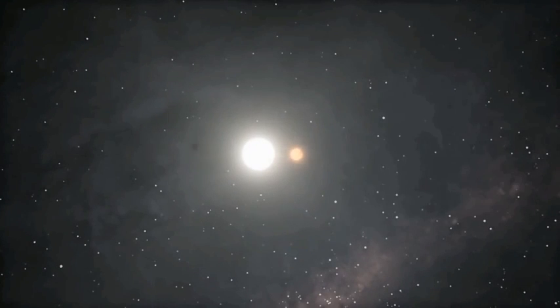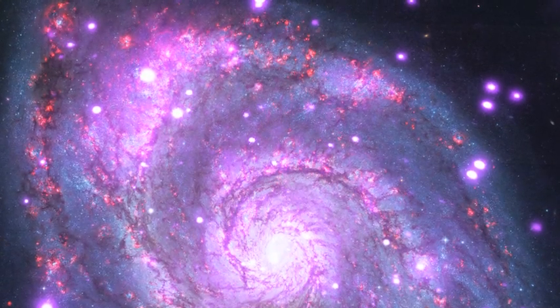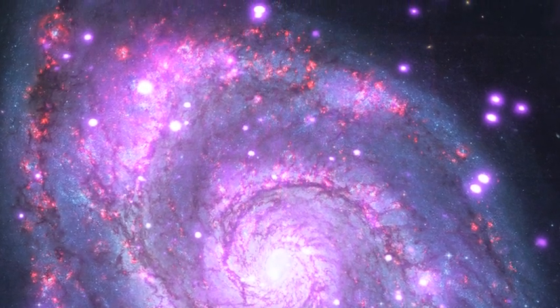A pair of stars orbiting each other is called a binary system. This photograph shows the flamboyant spiral galaxy called Messier 51.